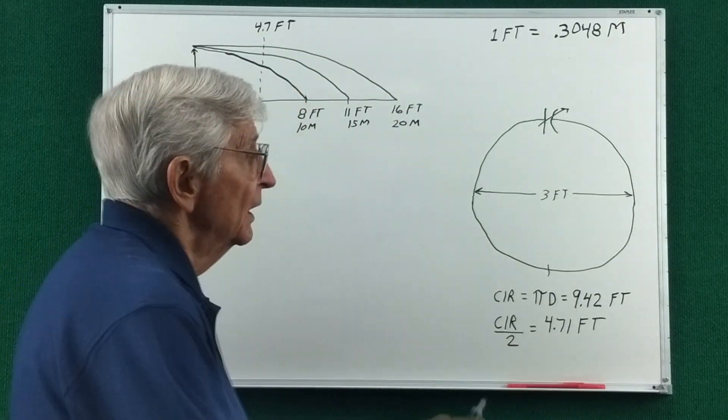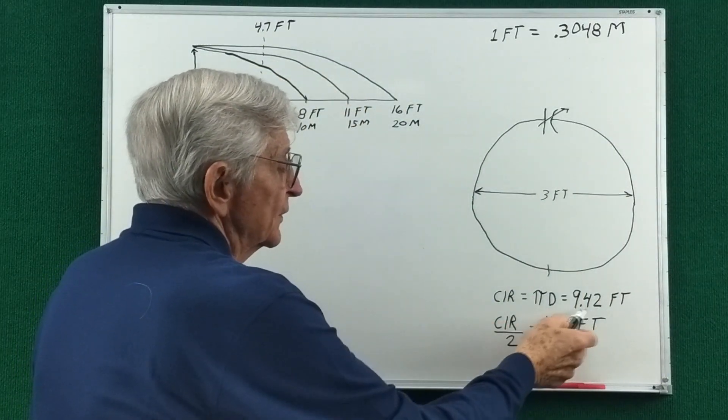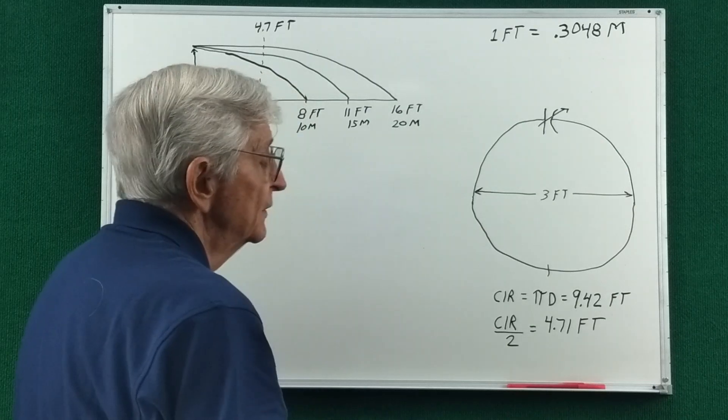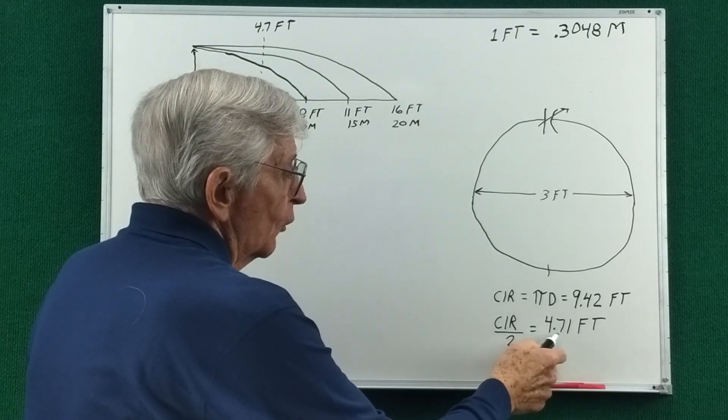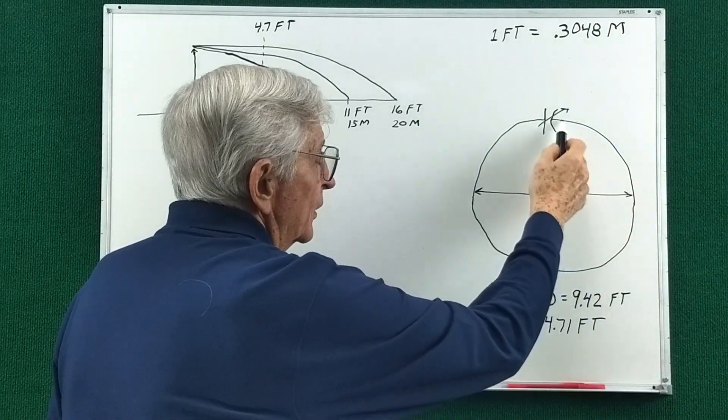But that loop was three feet in diameter, so that's a circumference of 9.4 feet. So that's roughly 4.7 feet from the bottom up to the capacitor.